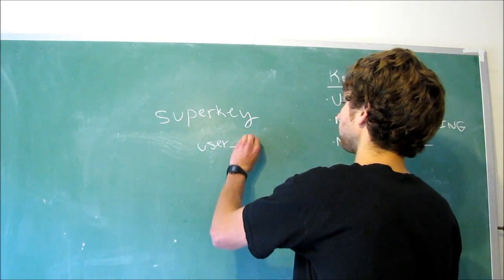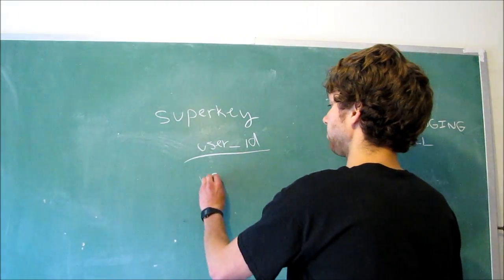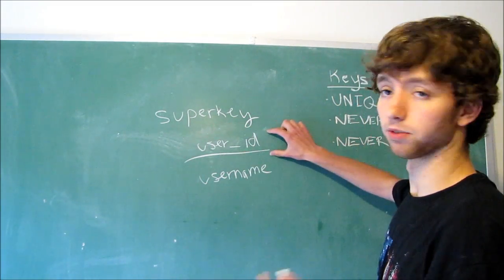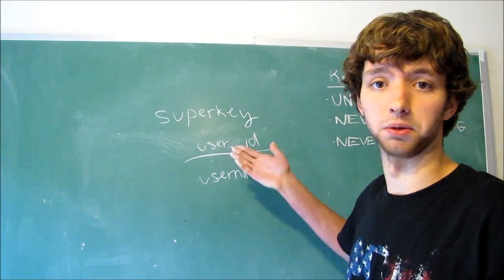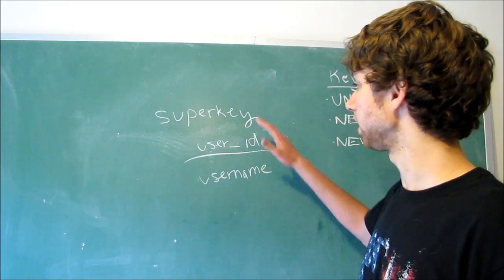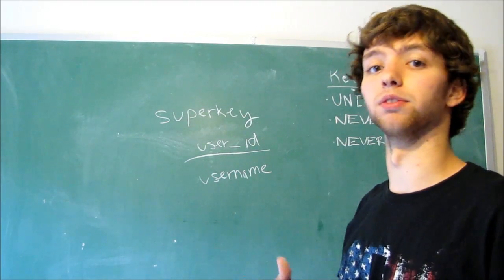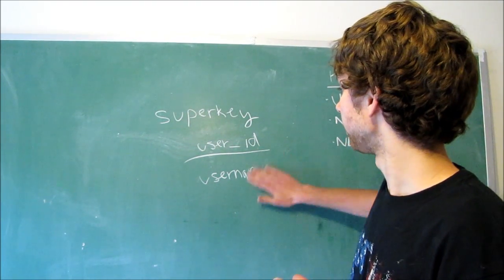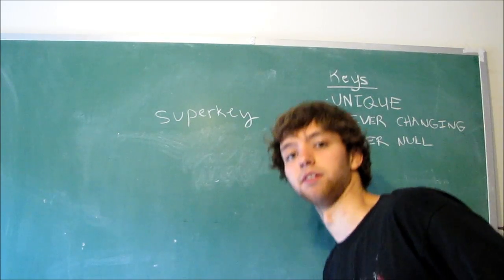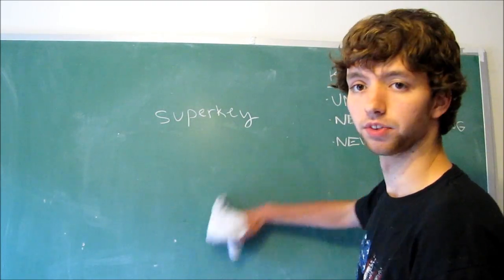Now, when you work with databases, you'll often see IDs, like user ID. This is a type of key. Then you also will sometimes find keys such as username. The difference between these is that this one's kind of just made up for the sake of the database. User ID of 748, what does that mean? Absolutely nothing. It's just a number. Username actually has some real world connection.